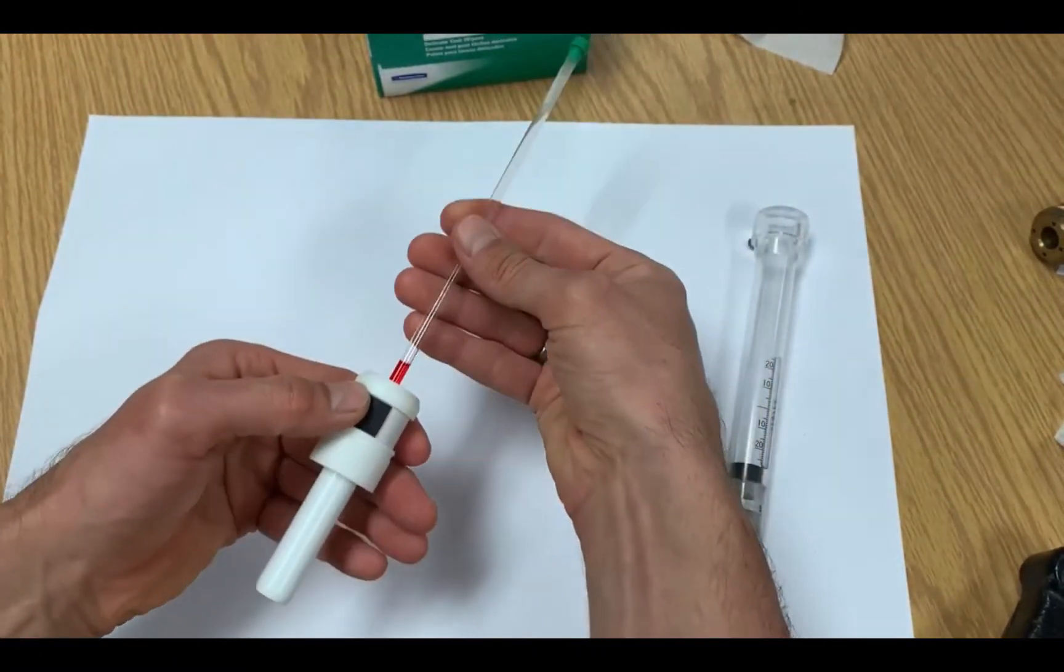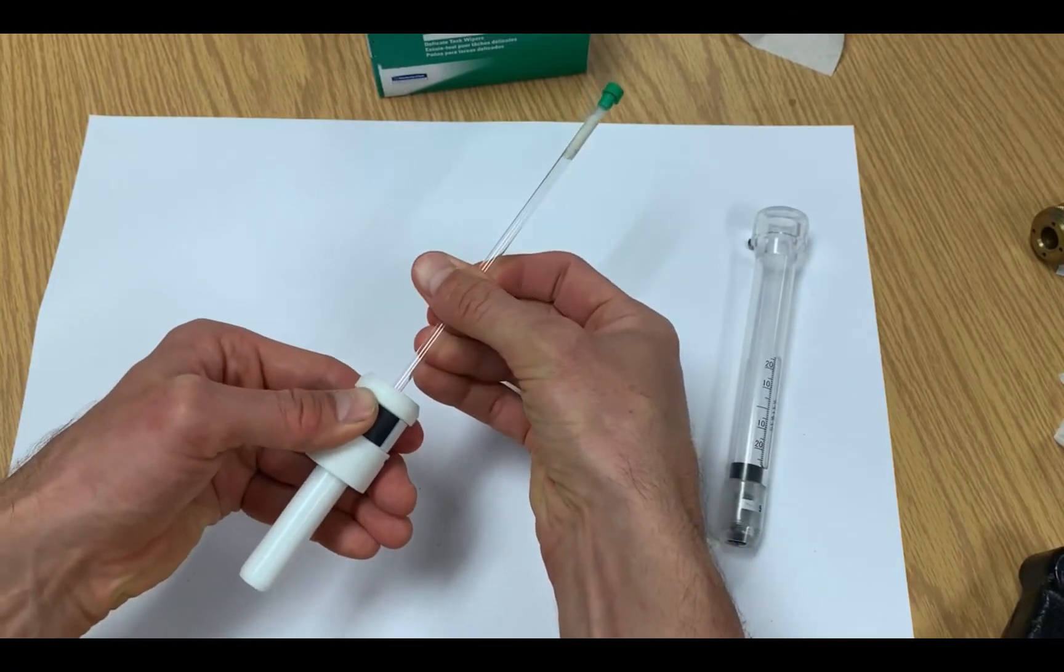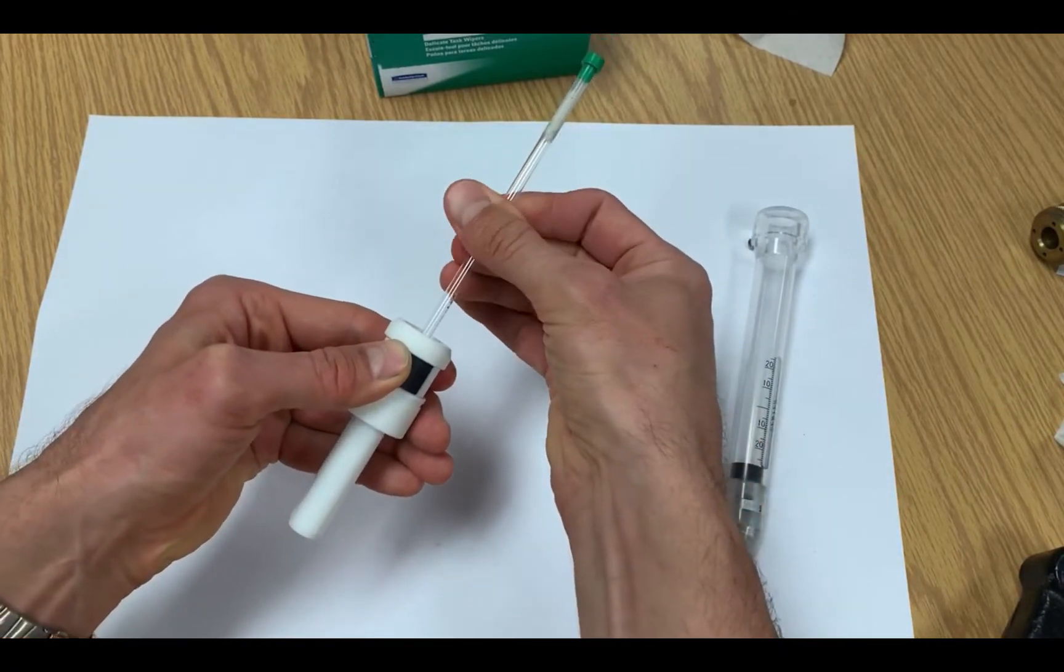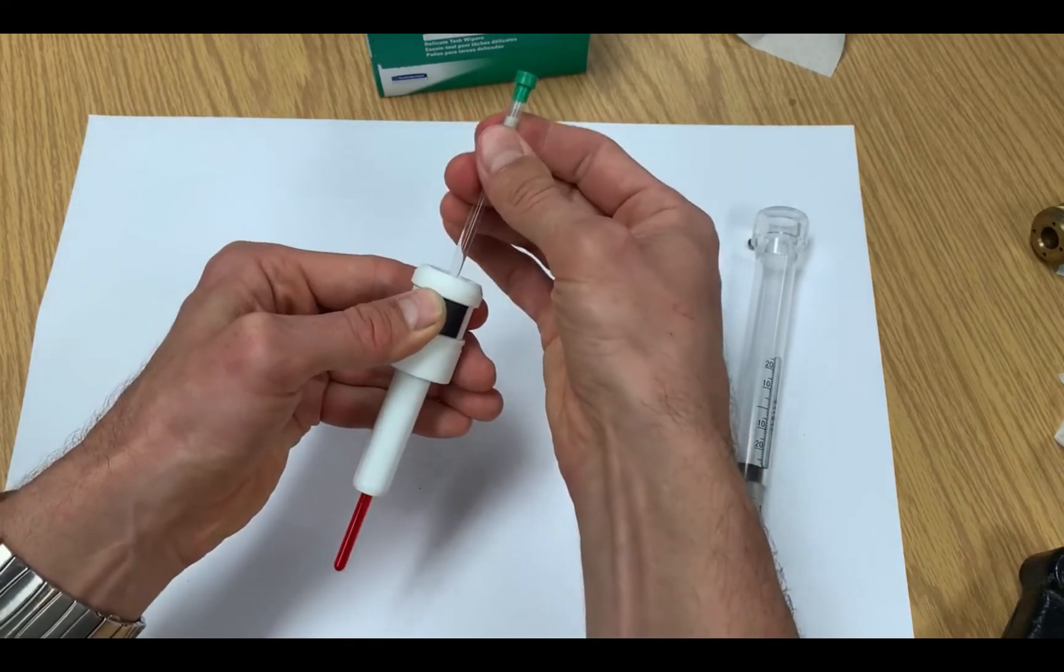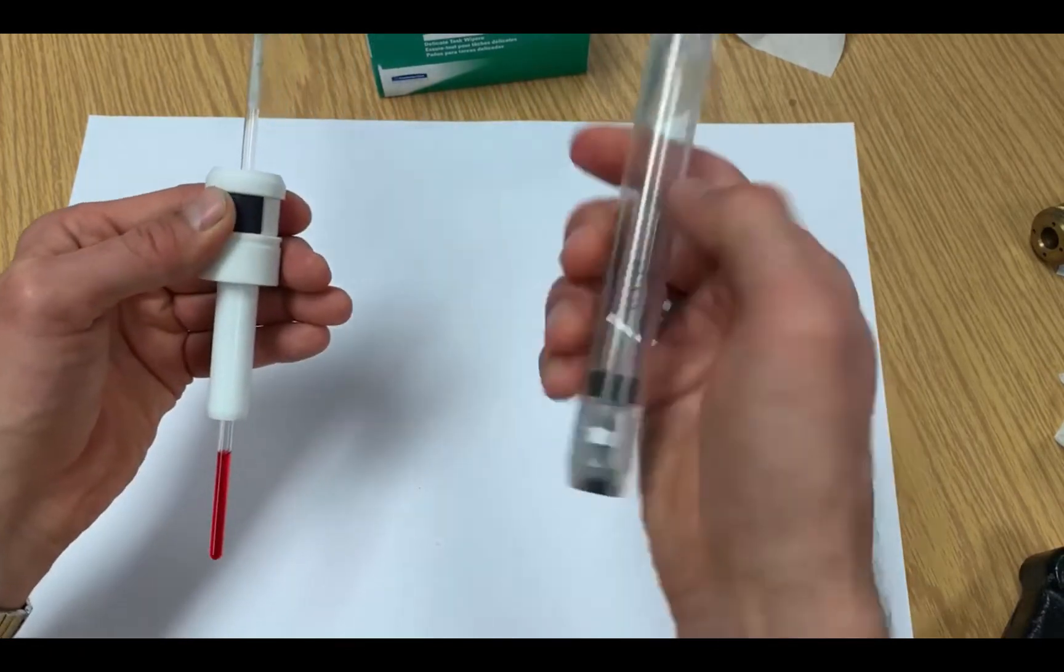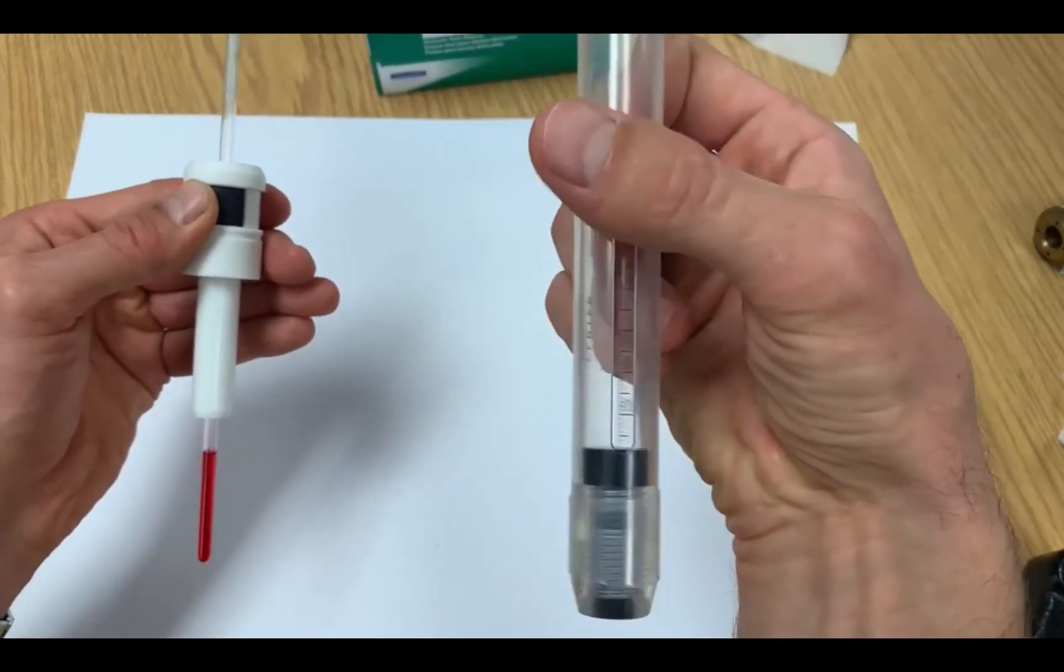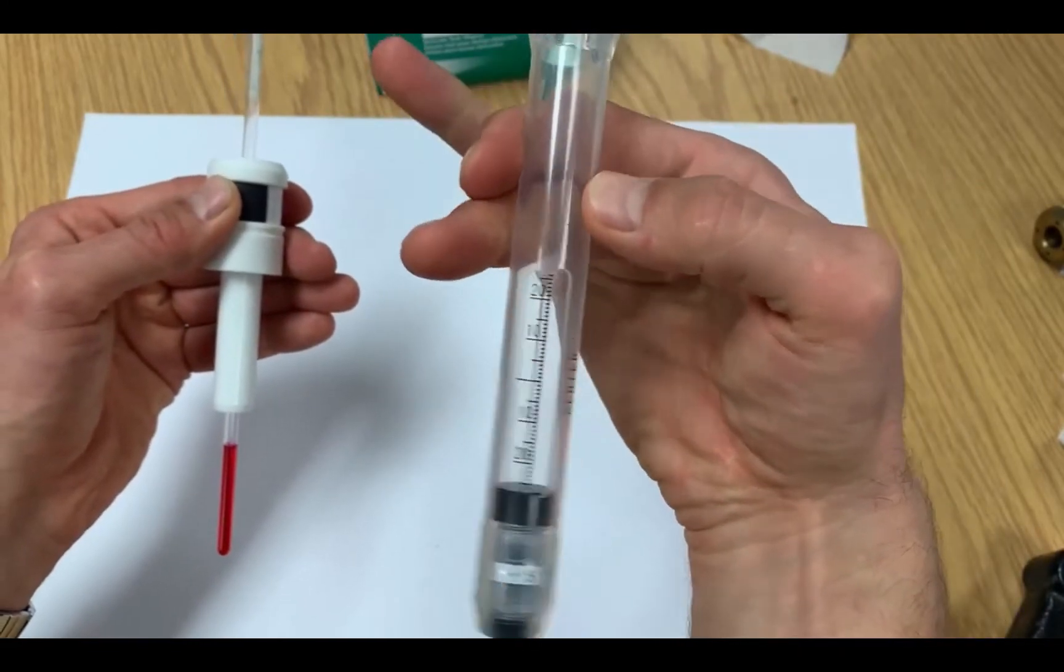When inserting the tube into the sample holder, use even pressure and rotate the tube as you push down, as my colleague is demonstrating here. This will overcome any friction between the tube and the O-ring inside the insert.